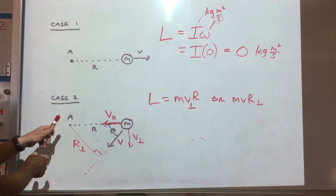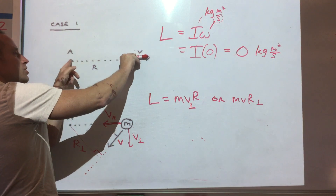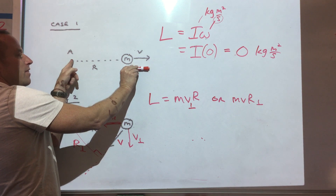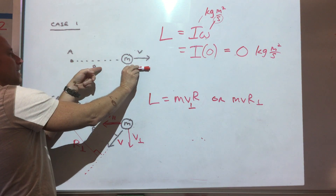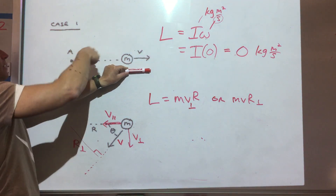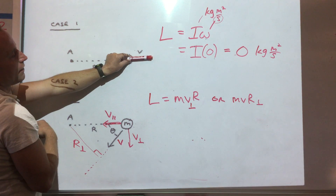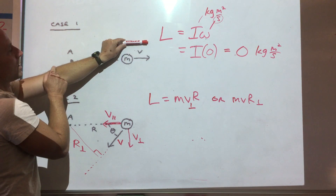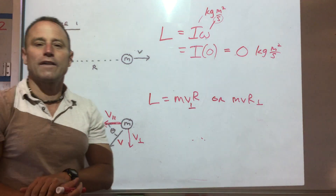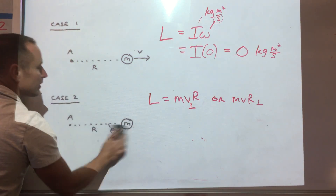So something can have angular momentum while moving in a straight line, as long as it's not moving directly at or away from the axis. If the object were shifted down a little, the line of velocity would miss the axis and there would be angular momentum—pointing out of the page. Shifted up, there'd be a rotation sense the other way, giving angular momentum into the page. That's how you find the angular momentum of a point mass.